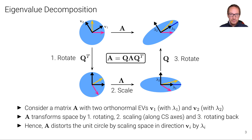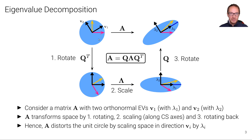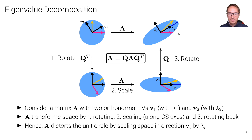Finally, we apply Q to rotate back into the original coordinate system. What this transformation effectively does through these three sub-transformations is distort the unit circle by scaling the space in the direction of V1 and V2 by lambda 1 and lambda 2 respectively — stretching in the direction of V1 and shrinking in the other direction.